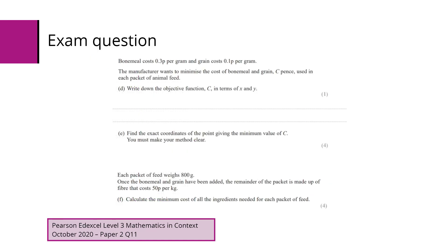Okay, there's part D, part E, part F. So we've got the cost of bone meal and the cost of grain per gram. The manufacturer wants to minimise the cost of bone meal and grain. We need to write down the objective function.